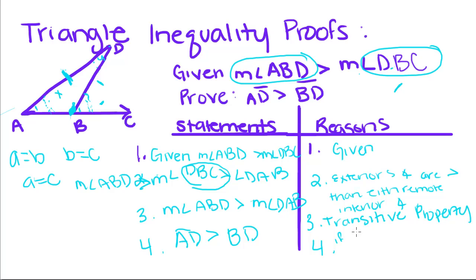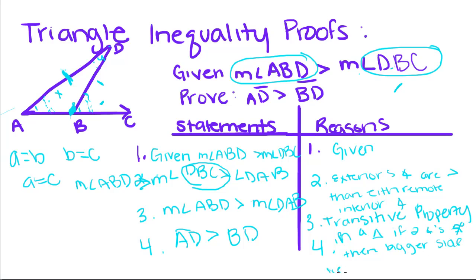In a triangle, if two angles are not congruent, then the bigger side lies across from the bigger angle.